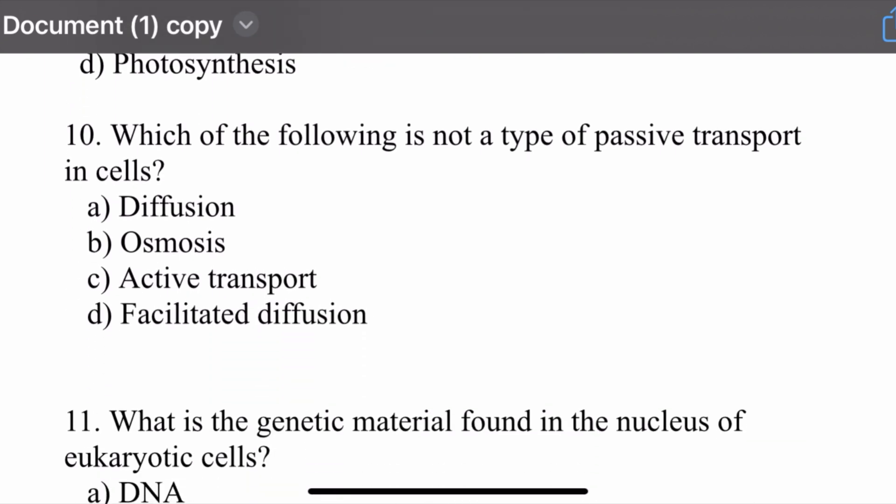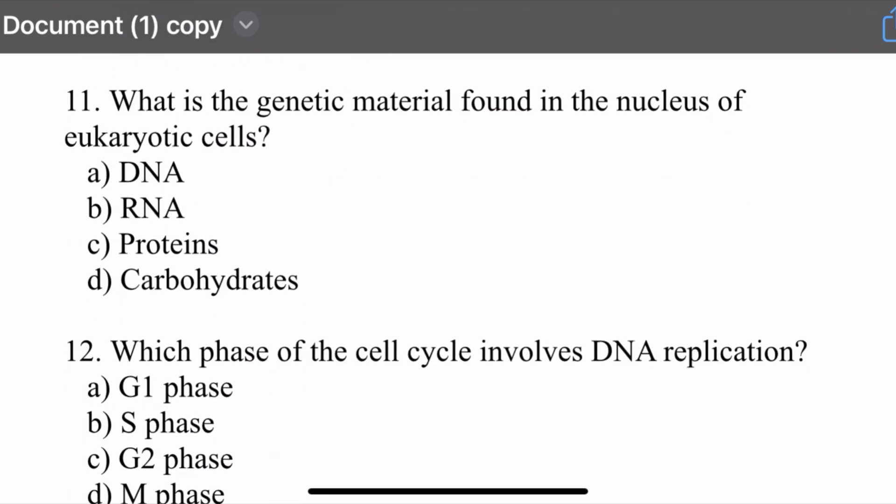Question number ten: Which of the following is not a type of passive transport in the cell? Options are: diffusion, osmosis, active transport, and facilitated diffusion. The right option is active transport. Active transport is not a passive transport; the remaining options are all passive transport in the cell.